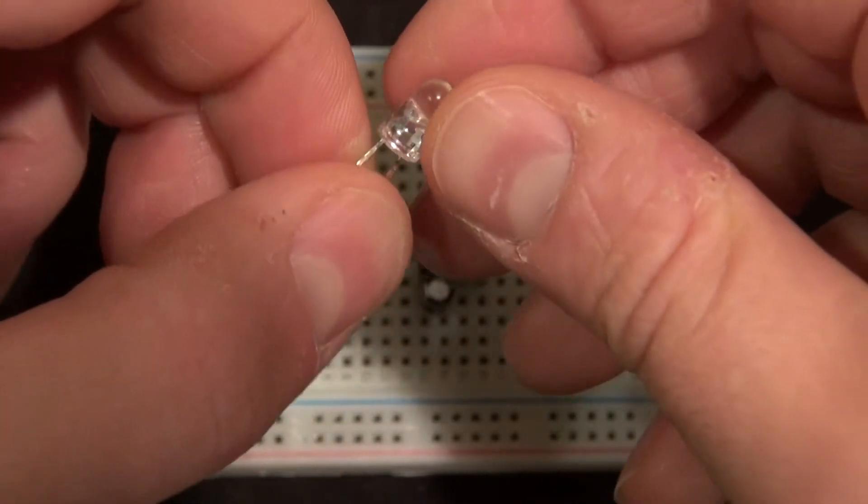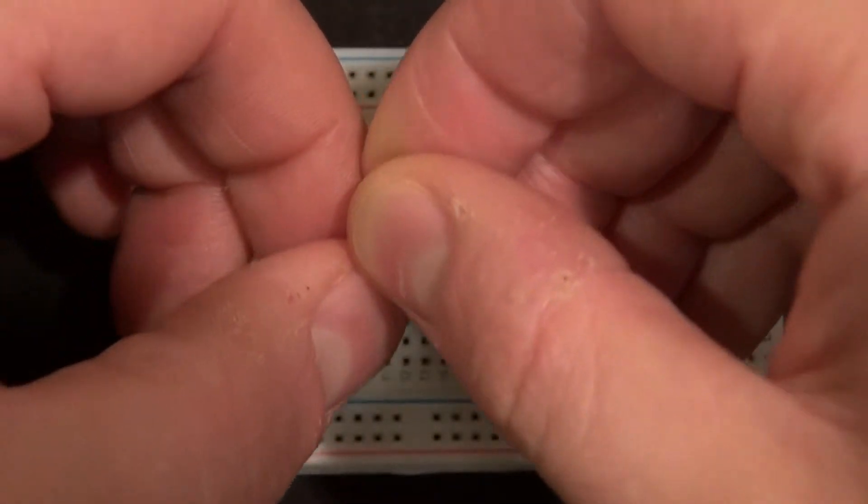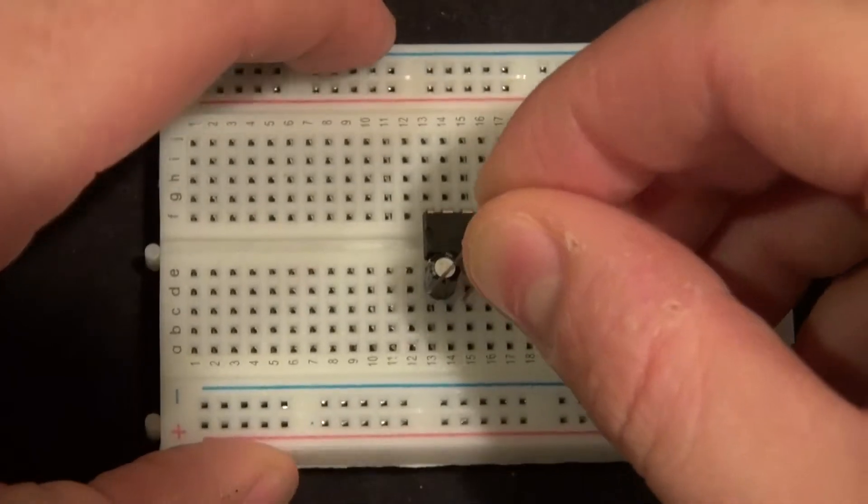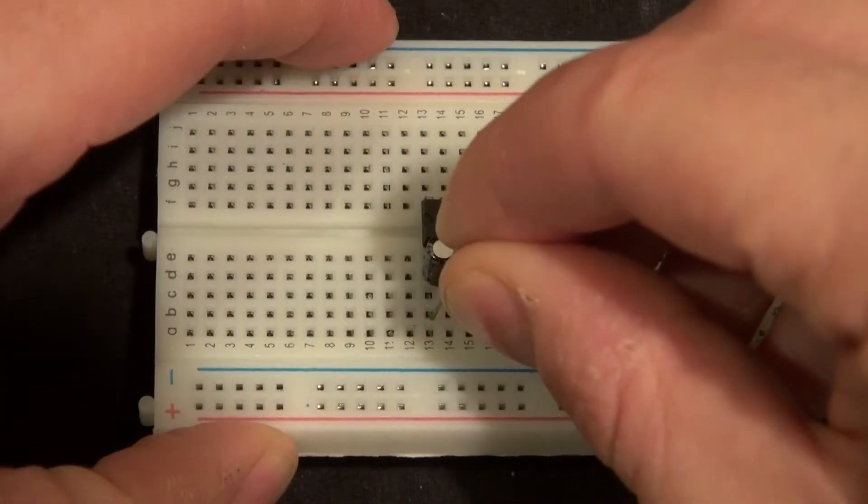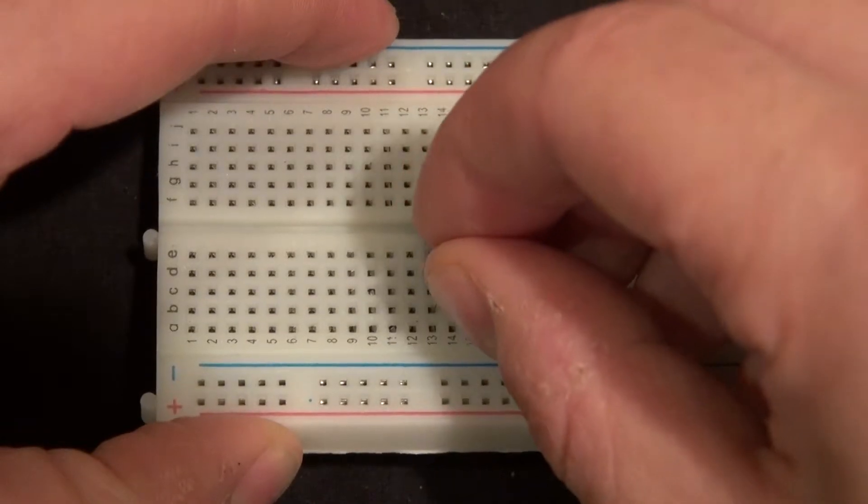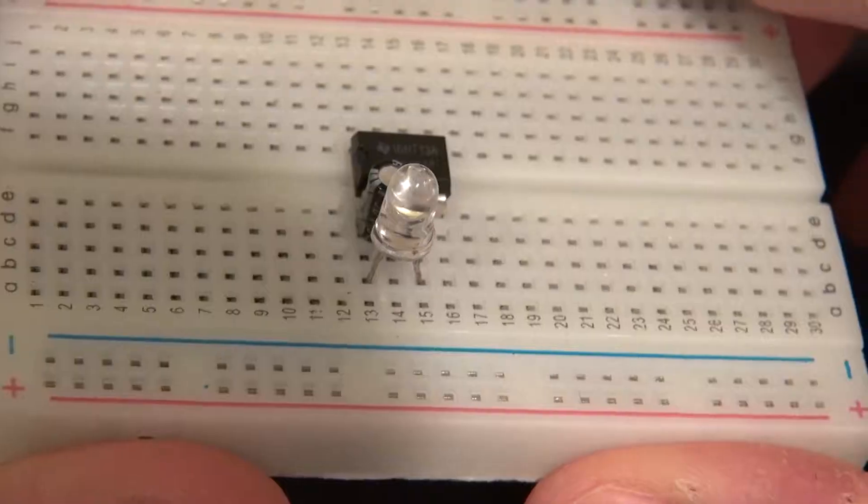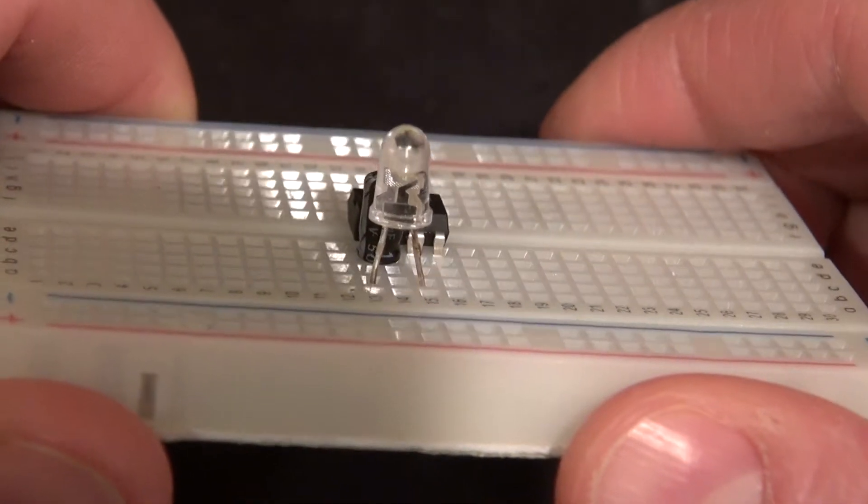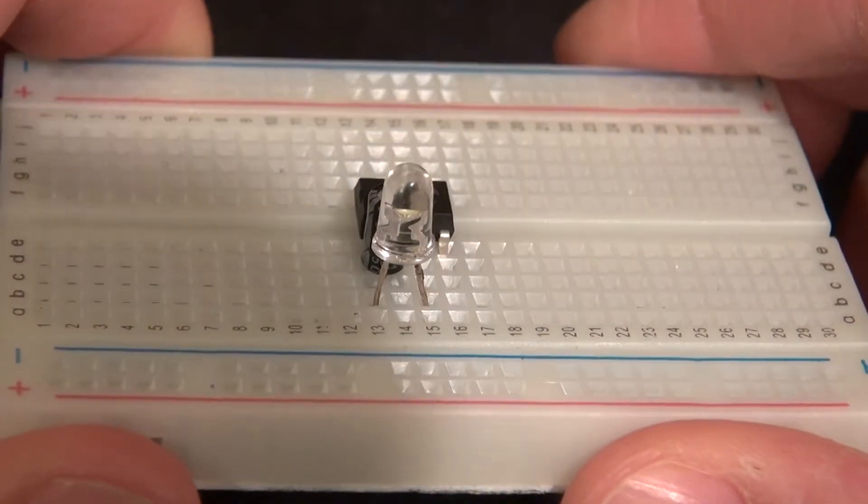Now take your LED and you have your cathode on the left and your anode on the right. Connect the cathode to pin 1 of your 555 timer, and your anode to pin 3 of your 555 timer, just like that.